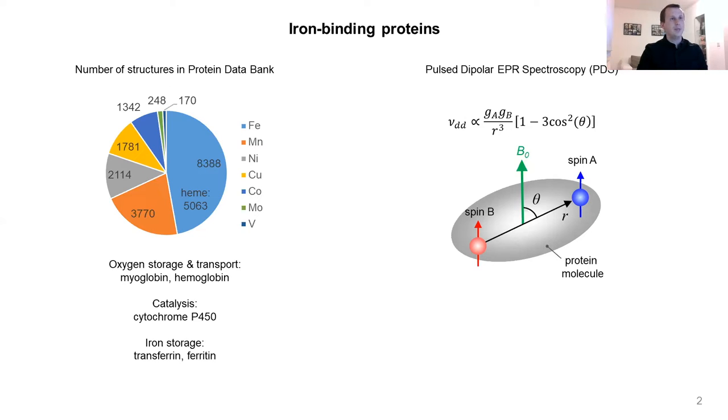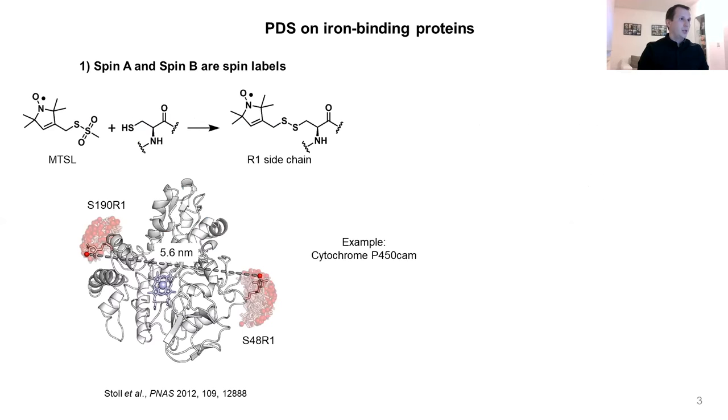In order to apply PDS to iron-binding proteins, we need to have at least two electron spin centers. Typically, this goal is achieved by spin labeling the protein. For that, we usually remove all native cysteines from the protein surface, then introduce two cysteines into the desired positions. We can use the spin label like methanethiosulfonate spin label to react specifically to the cysteine and form, for example, the nitroxide-containing R1 side chain.